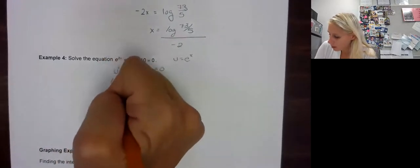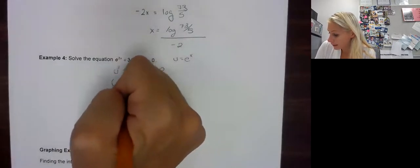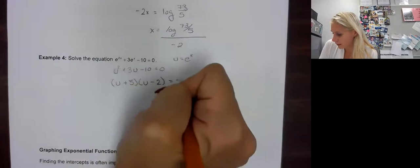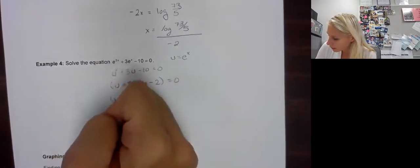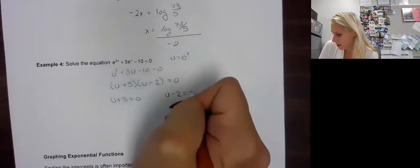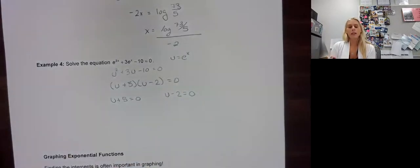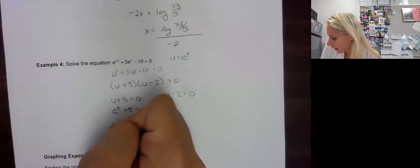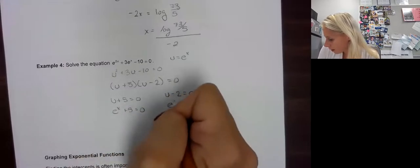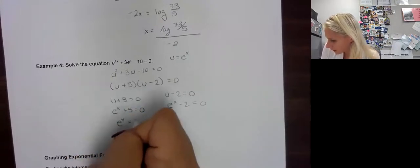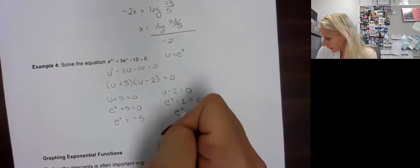Now I'm going to factor. We get u plus 5 times u minus 2 equals 0. Now, of course, we would set each part equal to 0. Here is where most people make their mistake. Didn't we begin our equations with u? No, we did not. We used them with e's. So I have to substitute the e to the x back in before I solve.